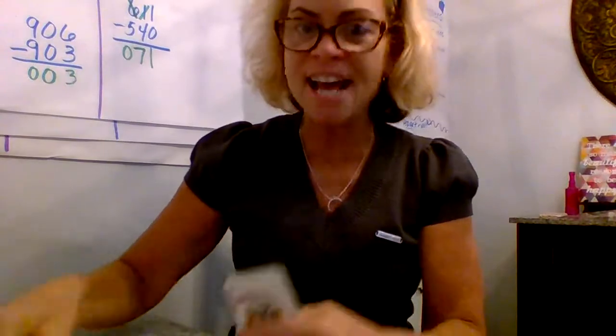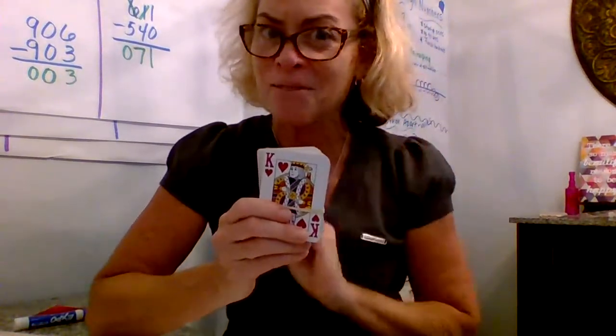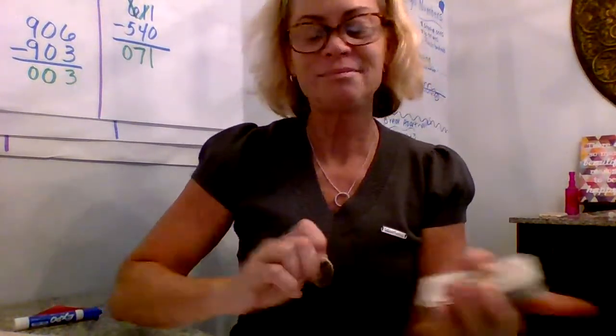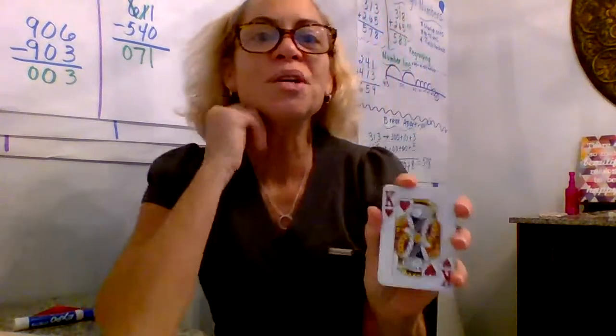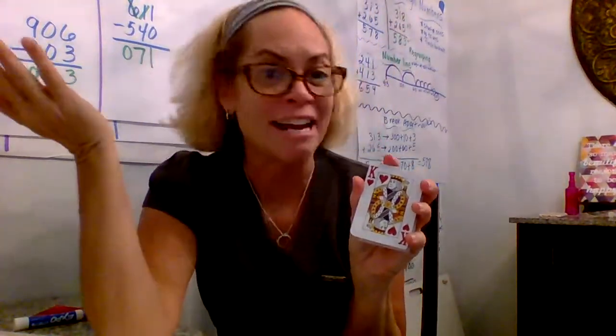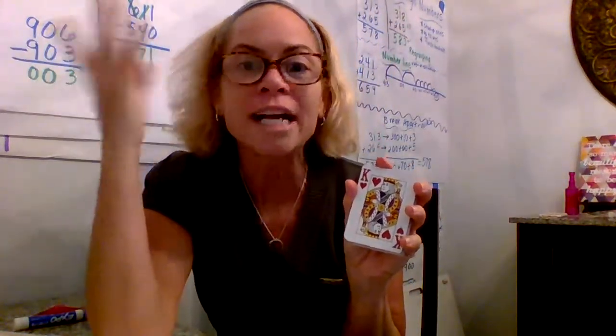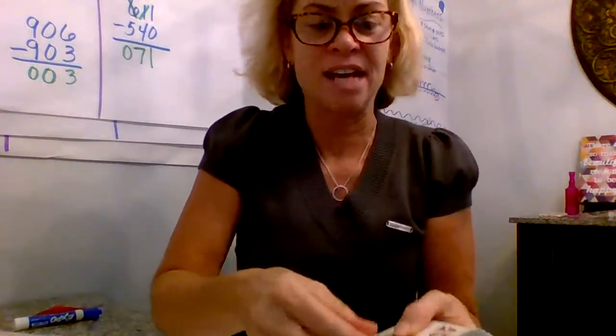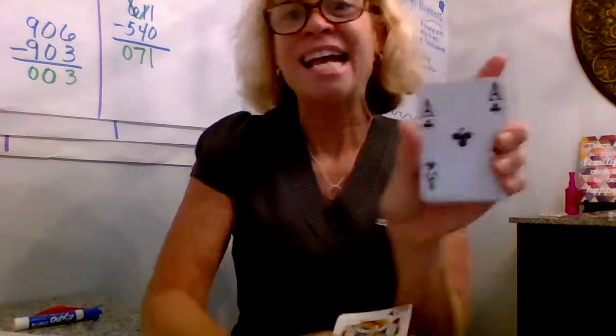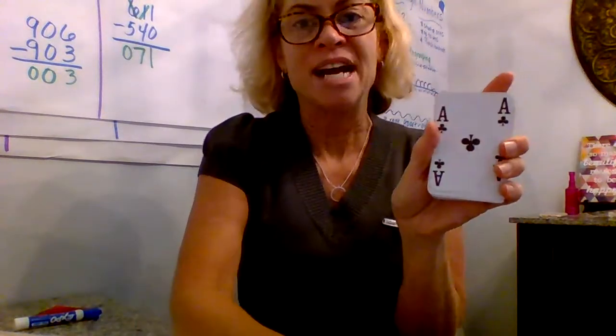The next one you can do is get a deck of cards. Again, at the dollar store sometimes they have two packs for a dollar. You can make the face card any number you want or it could be a zero. So lay out your three cards. I've got aces are ones, so I've got a zero, a one, and a four.